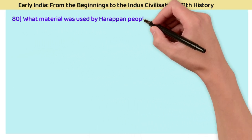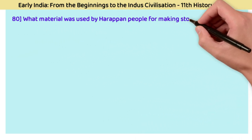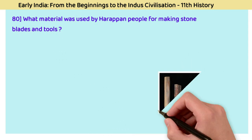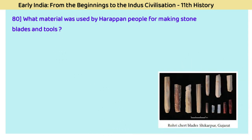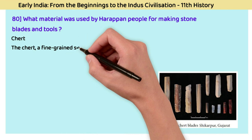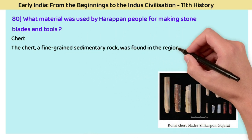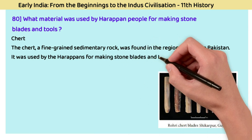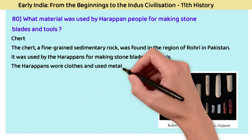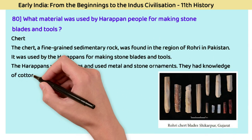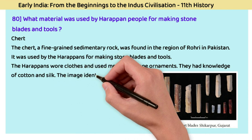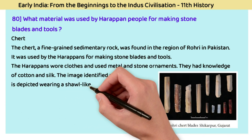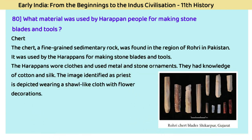Question 80: What material was used by Harappan people for making stone blades and tools? The answer is chert. Chert, a fine-grained sedimentary rock found in the Rohri region of Pakistan, was used by Harappans for making stone blades and tools. Harappans wore clothes and used metal and stone ornaments. They had knowledge of cotton and silk. The image identified as the 'Priest King' is depicted wearing a shawl-like cloth with floral decorations.